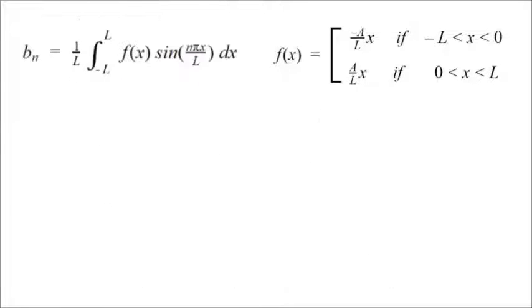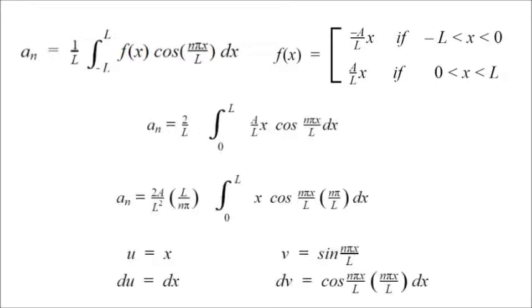Skip to B n next. Because B n is zero. Our function is even. A n is where we'll earn our keep this time. Hey, look. Integration by parts. Again. A little bit different this time.